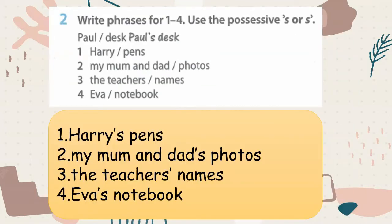Write phrases for 1, 2, and 4. Use the possessive apostrophe S or S apostrophe. For example, Paul's desk. Number 1: Harry's pen. Number 2: My mum and dad's photos. The teacher's names. And the last one: Eva's notebook.